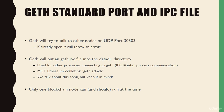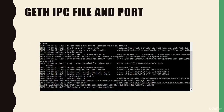Only one blockchain node can — and frankly should — run at the same time. The IPC file and the port will be printed out when Geth starts. Nothing to worry about and nothing to write down at this point; we will come back to this later.